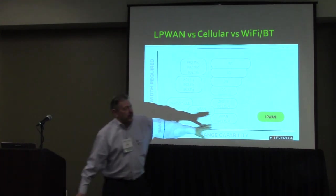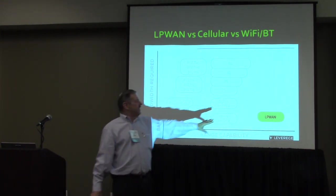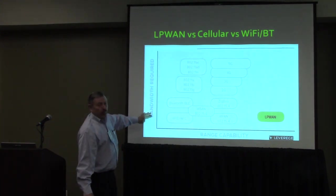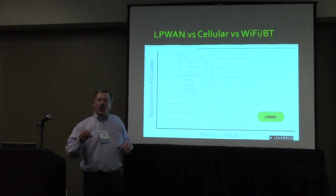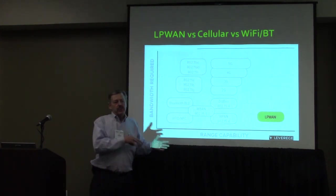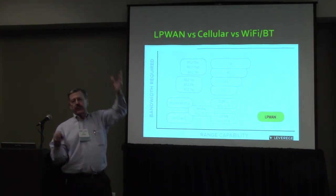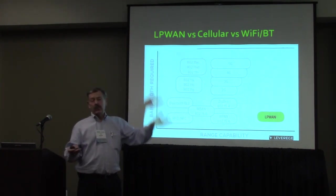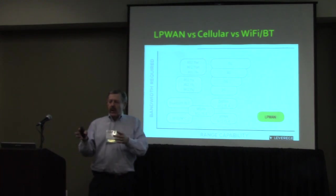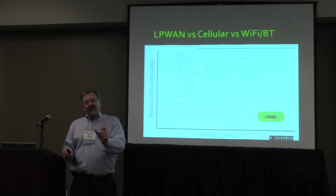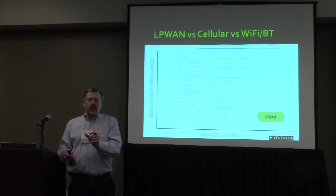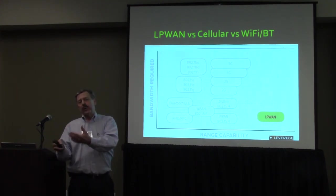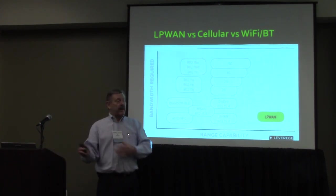LP-WANs are in a unique position: they have long range but relatively low bandwidth. Our smartphones need high bandwidth for voice, video, and data. But LP-WANs talk to devices that just have short messages to send, then go back to sleep — or they need short messages downloaded to turn things on and off, maybe do a security update.